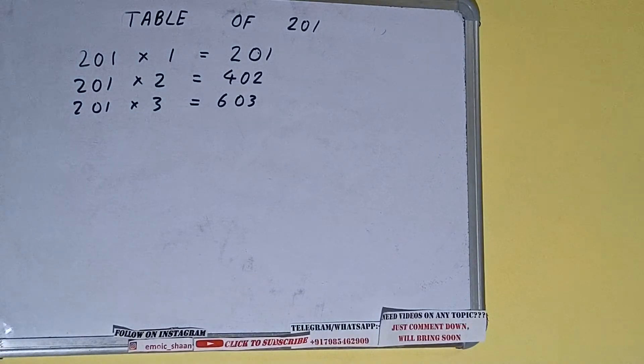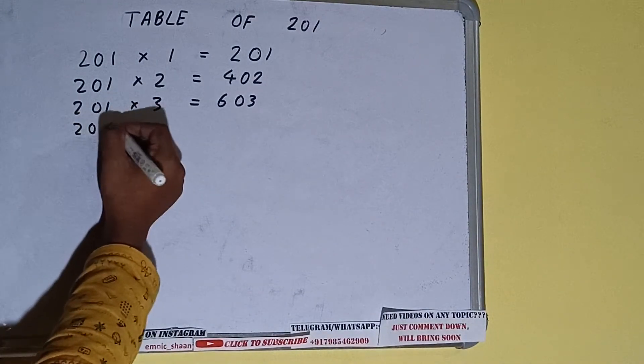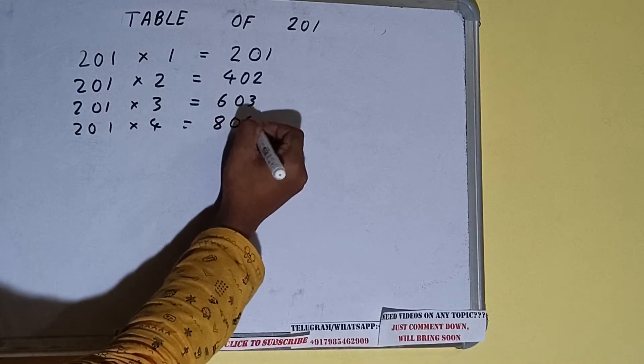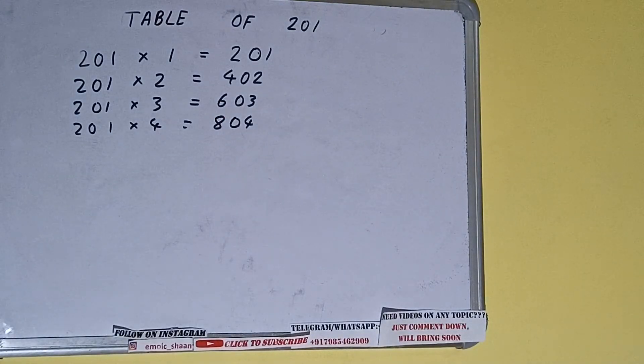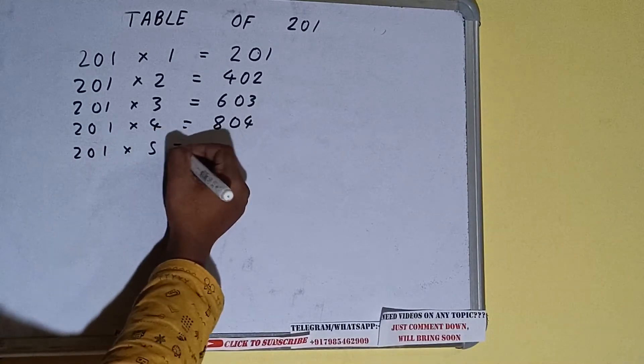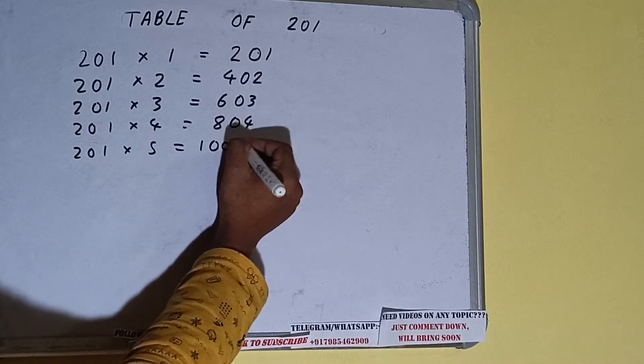201 into 4 times is 804. 201 into 5 times is 1005.